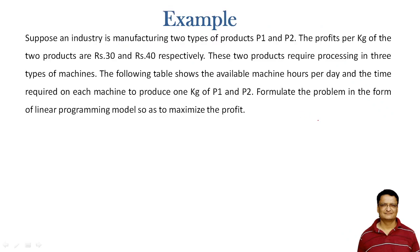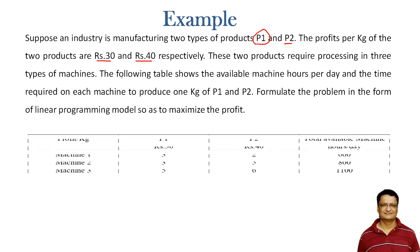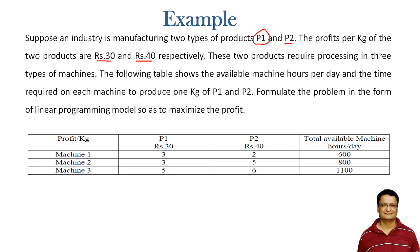Suppose an industry is manufacturing two types of products — product P1 and product P2. The profit per kg of the two products are ₹30 and ₹40 respectively. These two products require processing in three types of machines. The table shows the available machine hours per day and the time required on each machine to produce one kg of P1 and P2. Formulate the problem as a linear programming model so as to maximize the profit.